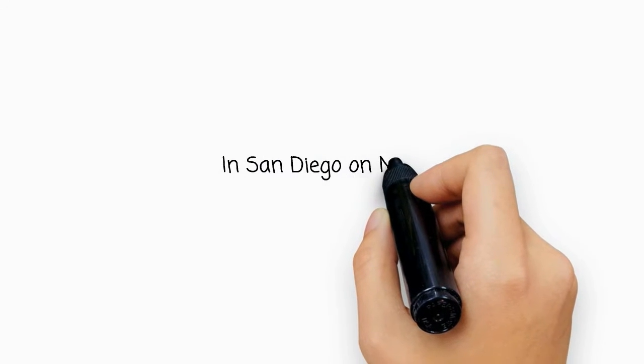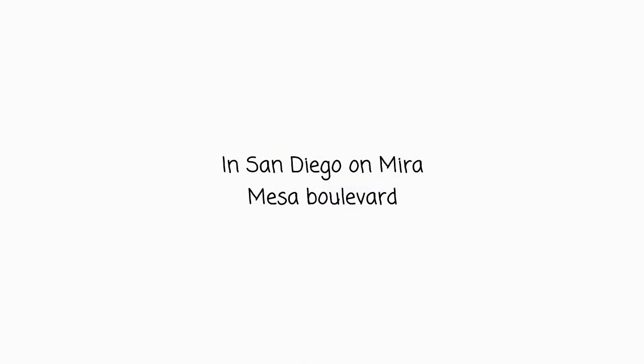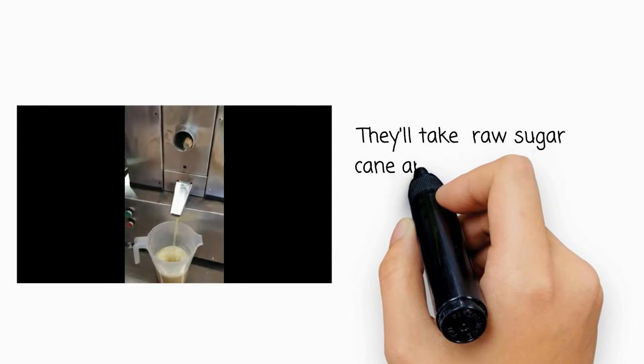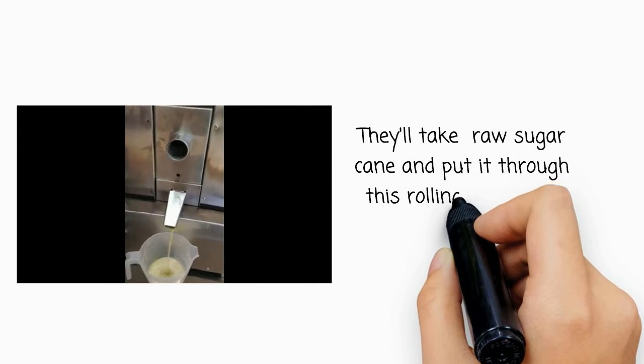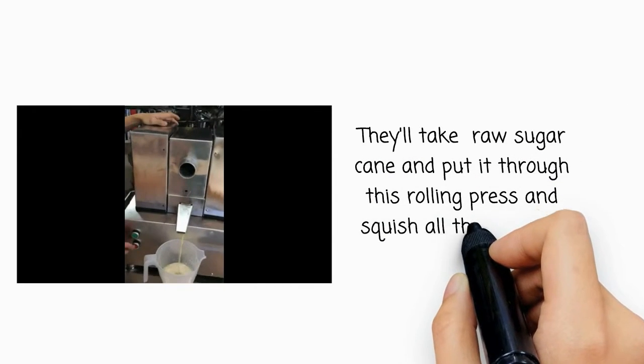You know, in San Diego on Mira Mesa Boulevard, there is an Asian market where you can go and they'll take raw sugar cane and put it through this rolling press and squish all the juice out.